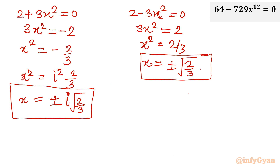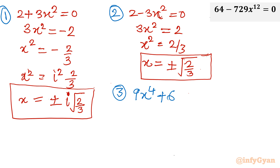Now for equation 3 and 4 combined: 9x⁴ ± 6x² + 4 = 0. I will treat this as a quadratic in x², and apply the Sridharacharya (quadratic) formula.